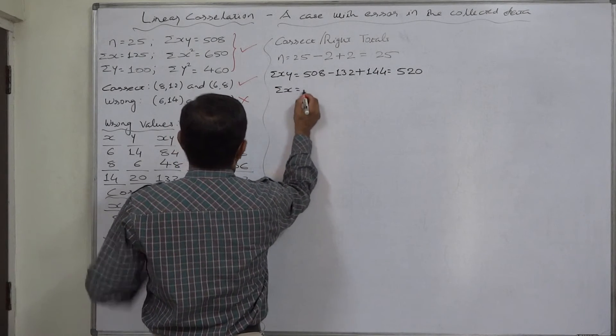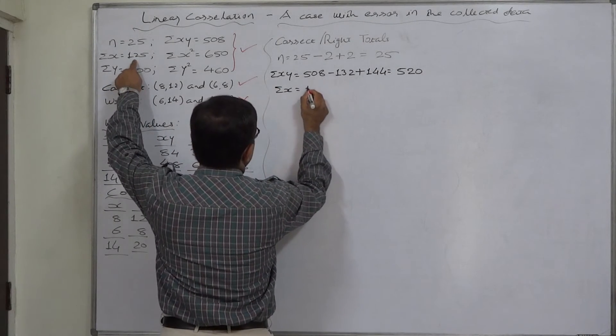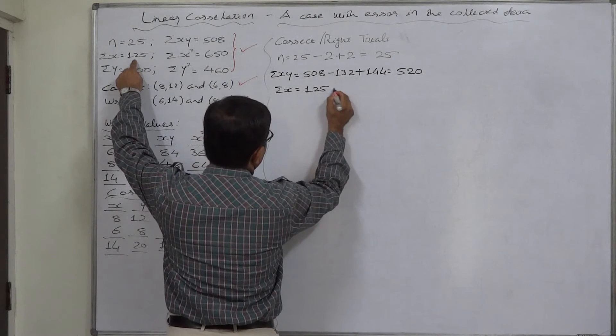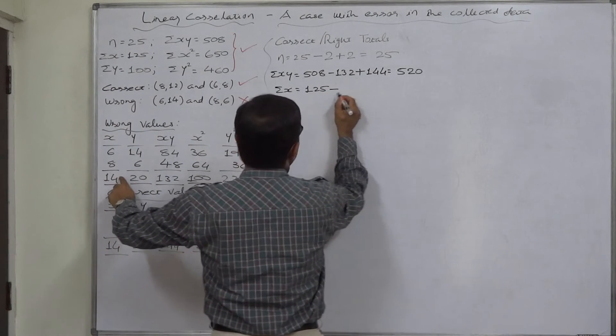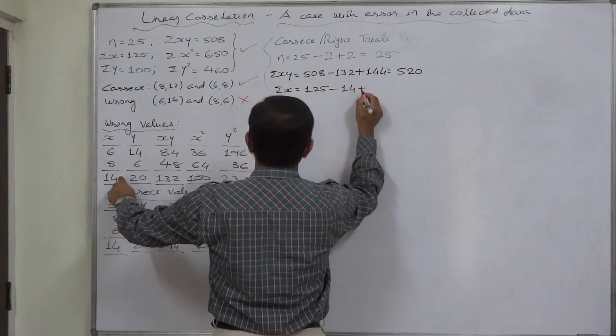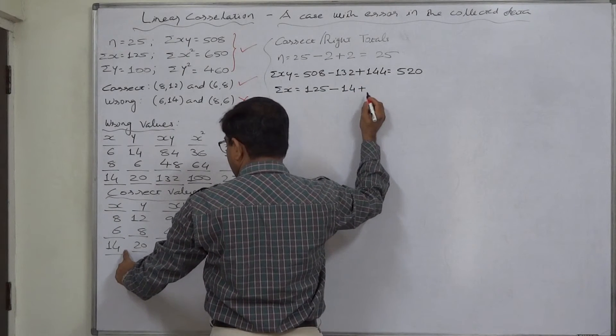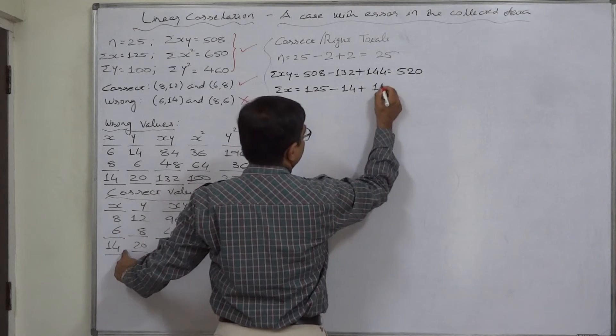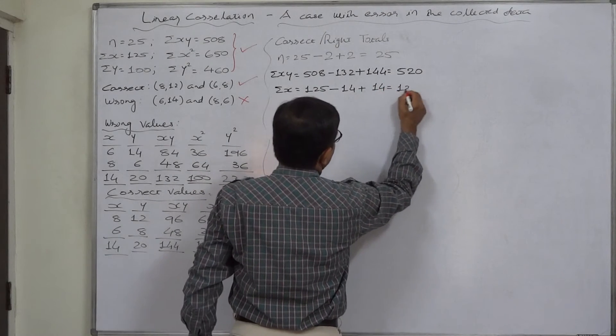Σx. It is 125 before any rectification. Subtract effect of wrong values of x, 14 and add the effect of correct values of x, again 14. So it remains 125.